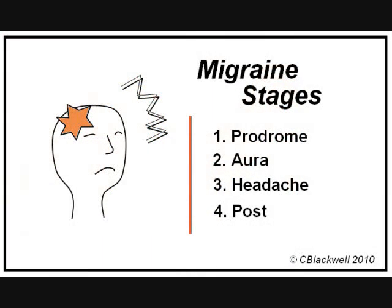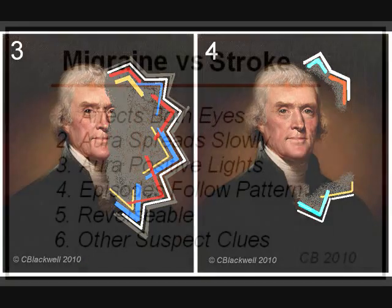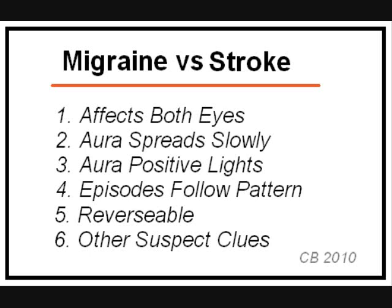Migraine comes in repeated episodes that follow a pattern. TIA can be repeated, but it doesn't follow the migraine pattern — and repeating TIAs are a red flag warning of impending stroke. Migraine symptoms are reversible; the scintillations and scotoma clear with vision returning to normal, and very rarely is there a lasting functional defect. It is important to recognize that nothing else suspicious is going on and to take into account the presence of other risk factors. You need your doctor to help sort that out.